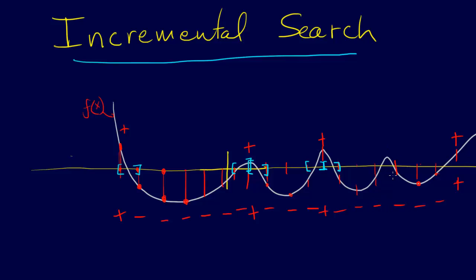We totally missed that root — and that can happen if your interval isn't small enough, and it's hard to know that it's small enough. You can totally miss a root. And then minus, minus, minus, and then we got another bracket. So this is incremental search, and that's a way of going through and locating the brackets to use for a bracketing method — or actually any method. It's always good to guess something that's close to an actual root, and it's good to have an idea of what a bracket is because then you know whether it's converged. And so there you go — that's incremental search.